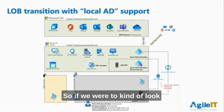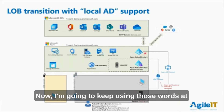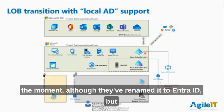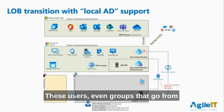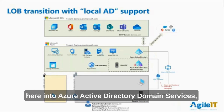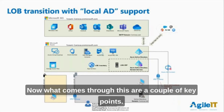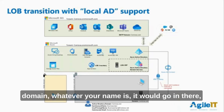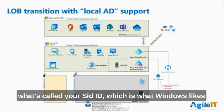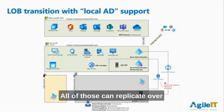Looking at this area here: local Active Directory will sync with Azure Active Directory - I'll keep using those terms for now, although they've renamed it to Entra ID. It will replicate users and even groups from local Active Directory into Azure Active Directory. Azure Active Directory Domain Services is a replica of this. What comes through includes a couple of key points: your SAM account name - where you fill in your domain slash username - and what's called your SID ID, which Windows uses to track things like file system permissions. All of those can replicate over.